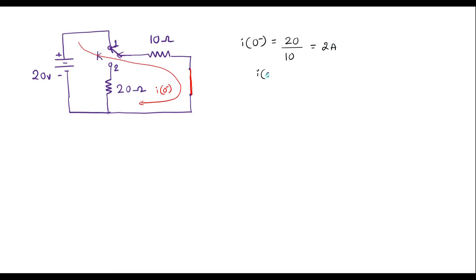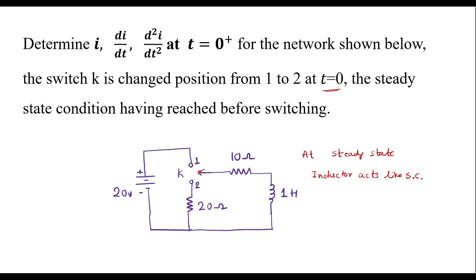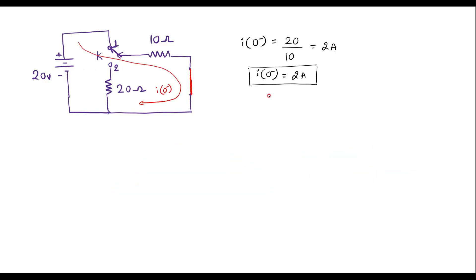At t equal to 0, the switch moves from position 1 to 2, and immediately the current through the inductor does not change. So I of 0 plus is also equal to I of 0 minus, that is 2 amps, because current through an inductor does not change instantaneously. Therefore, I of 0 plus equals I of 0 minus immediately after the switching operation.